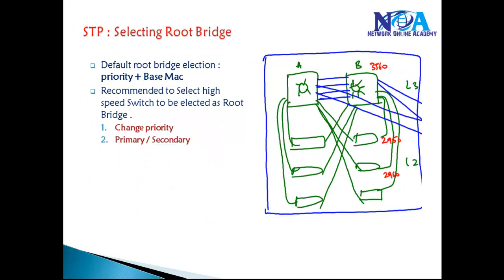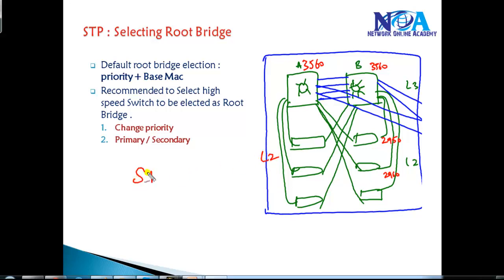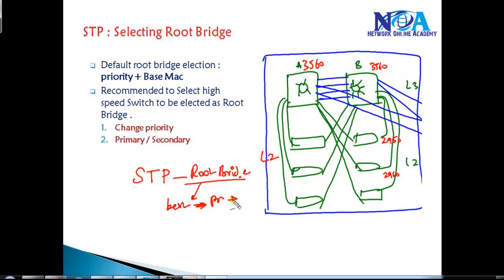The first thing we'll understand is why there is a need for manually selecting the root bridge. Taking an example network with some switches: assume the A and B switches are 3560 distribution level switches, and the remaining switches at the bottom are layer 2 switches — either 2950 or 2960. In spanning tree, the root bridge is selected based on the best bridge ID, which is calculated from the priority value and the MAC address. That root bridge becomes the centralized switch from where all traffic flows.